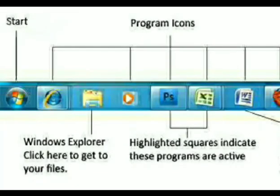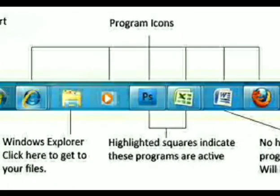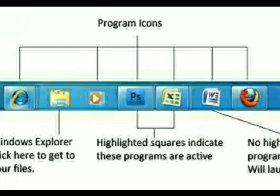Let's look at our taskbar one more time in detail. On the left of the taskbar, we see our start button. After that, we see some pinned programs on the quick launch bar area of the taskbar. As in this image, we can see that some programs are highlighted with a square. All such programs highlighted with a square and appearing lighter in shade are active programs, meaning they are running on our system.